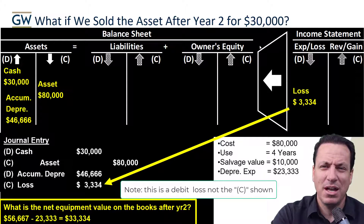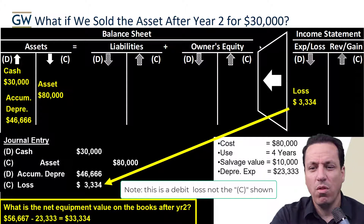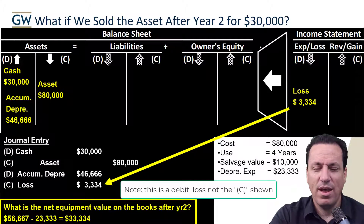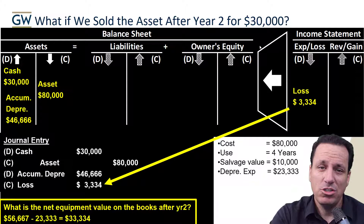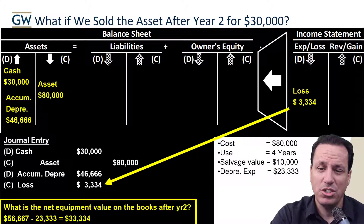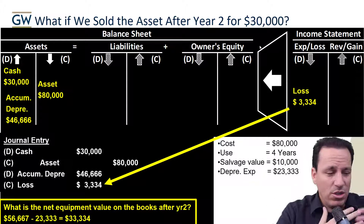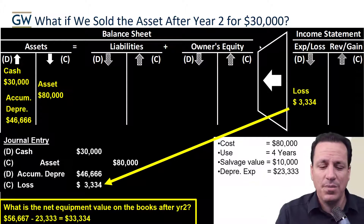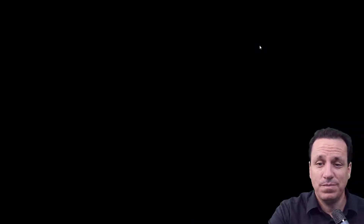No matter what happens, we can figure this out by following the laws of accounting: debits equal credits, and you must have at least one debit and one credit that maintain balance. This covers the journal entries associated with depreciation — recording accumulated depreciation and depreciation expense each period, and then recording the sale of an asset. See you in the next video for another example of straight-line depreciation.